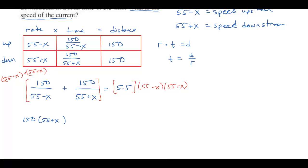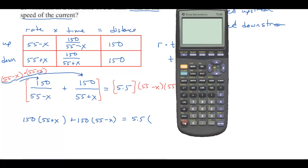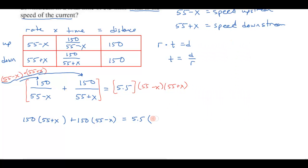On this side, when I distribute to the first term, the 55 minus x's cancel, giving me 150 times 55 plus x. When I distribute to the second term, the 55 plus x's cancel and I'm left with 150 times 55 minus x. Over on the right hand side, I get 5.5 and then I have to multiply these out. That's the difference of squares. I get 55 squared is 3,025 minus x squared.